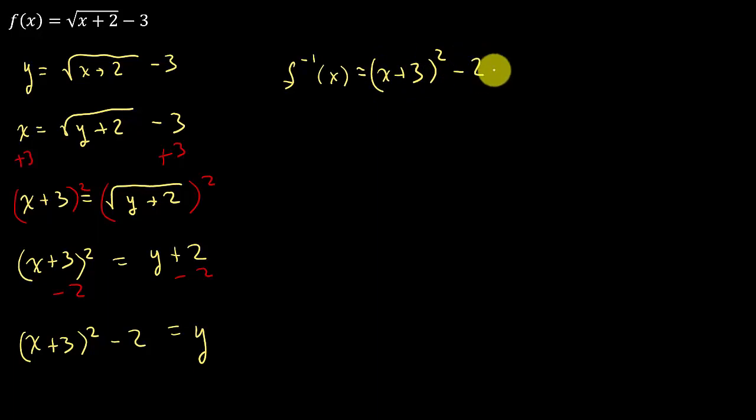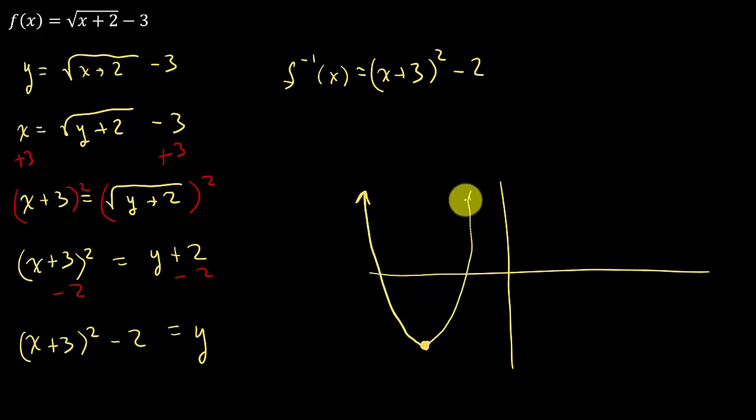Alright, so hopefully you see a problem with this. If we look at this graph, we have a vertex of negative 3, negative 2. So negative 3, negative 2, that would be somewhere down here. I don't care about where it is exactly. And then this is a parabola that opens upward.